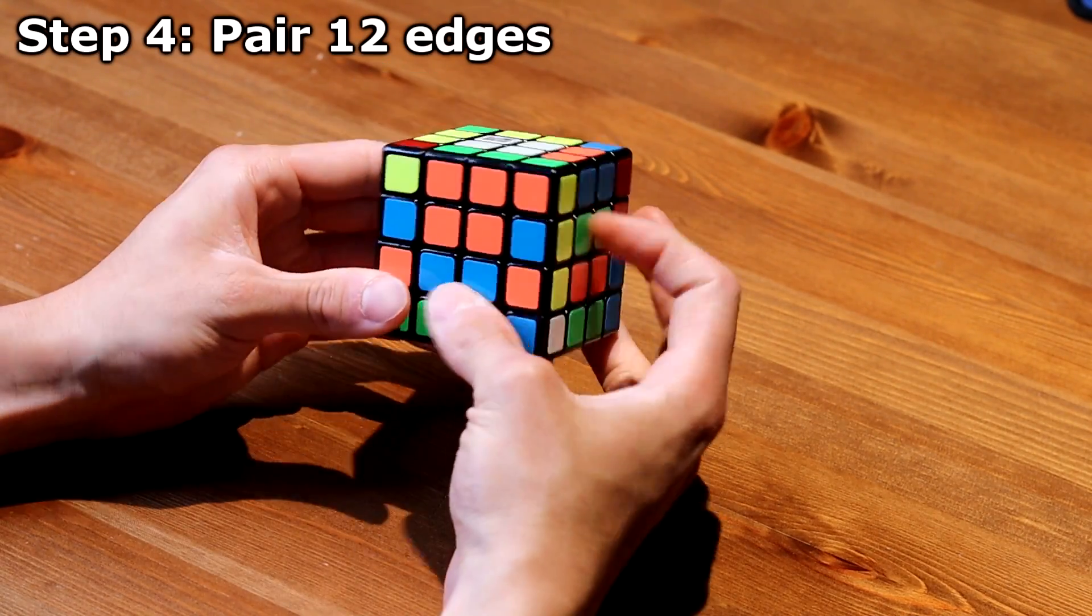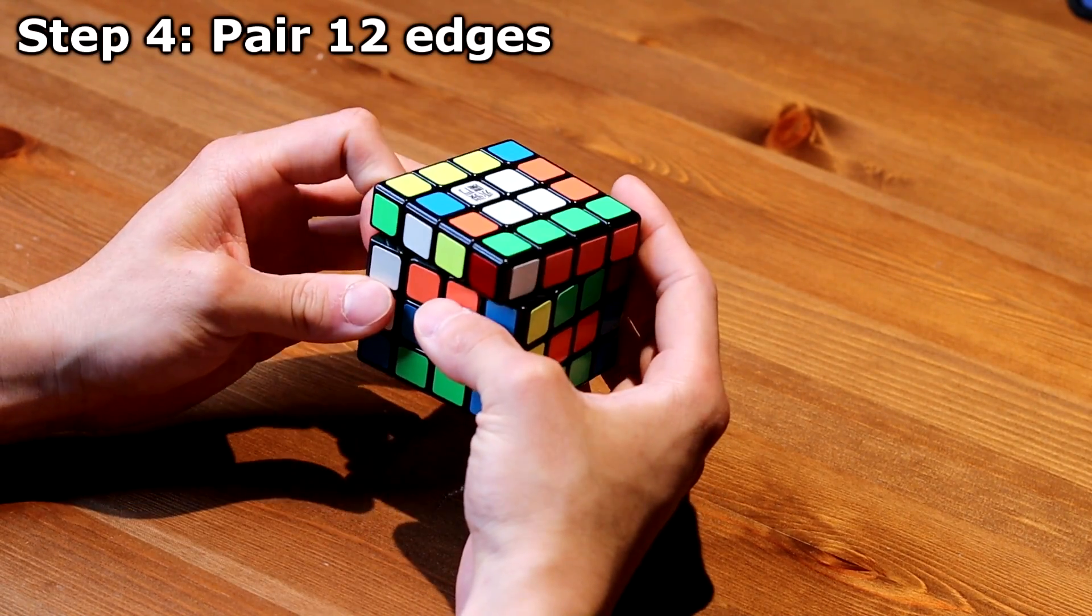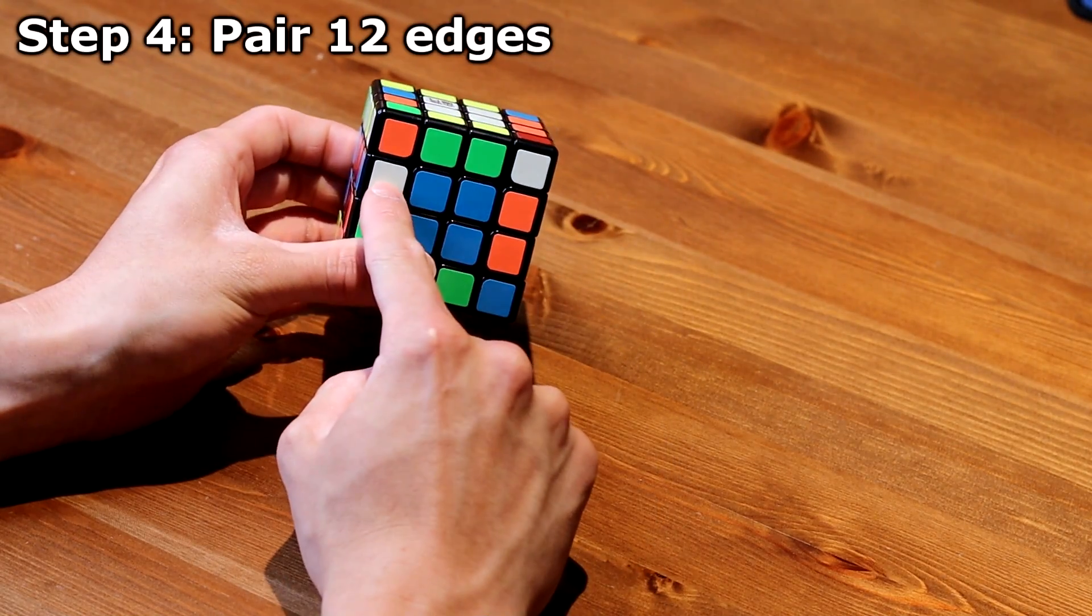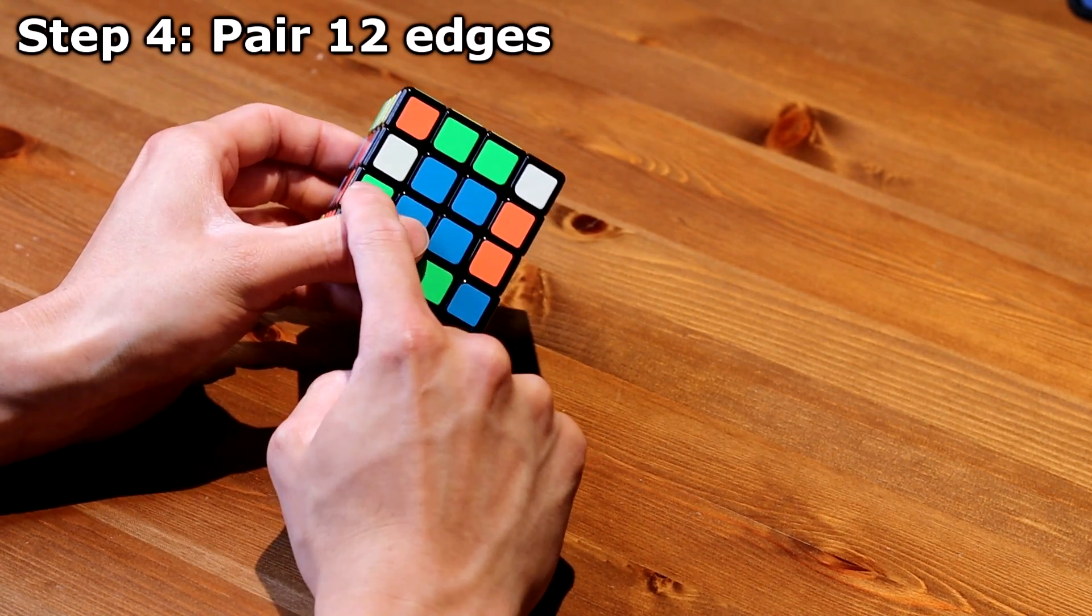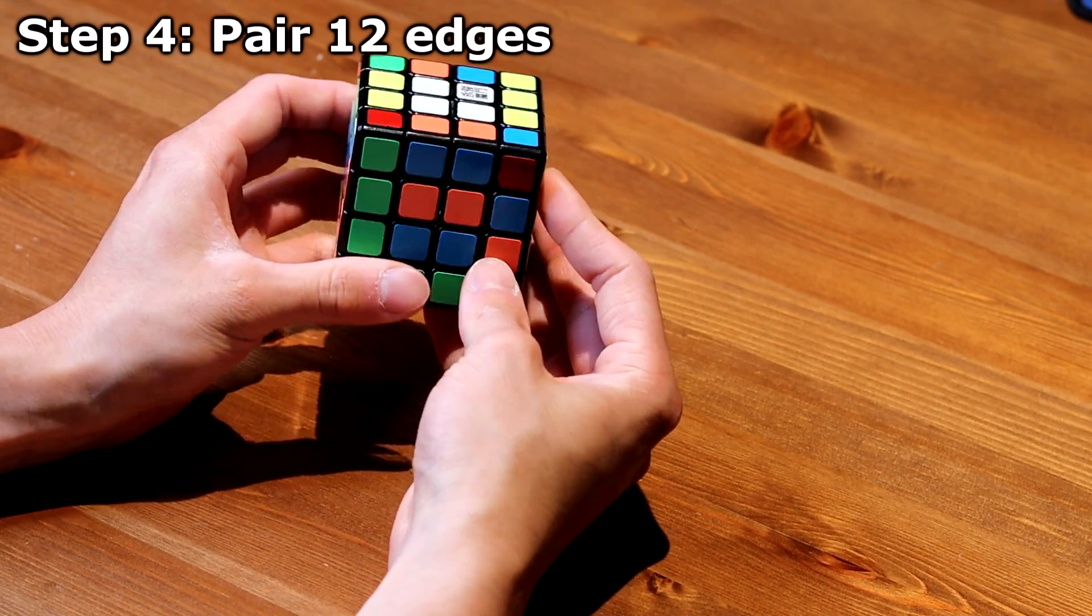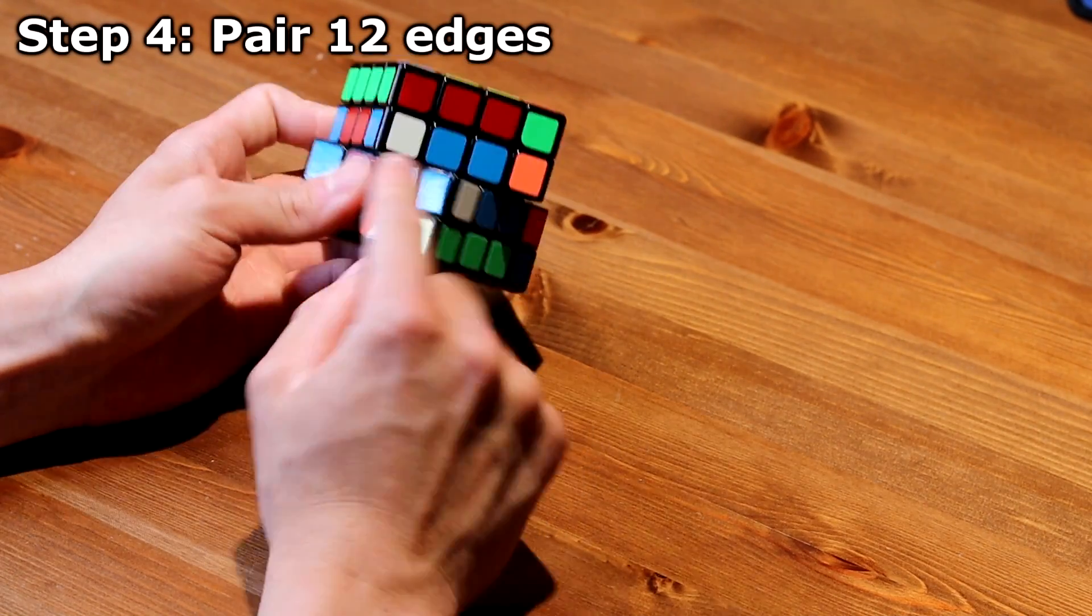And there is also another way so I can prevent two edges from not being solved. So what I can visualize is this white and blue piece. So if I slice it, I want the white and blue piece to be on the bottom face. So when I slice it back, both of them are solved, so I don't have to worry about the last two centers.